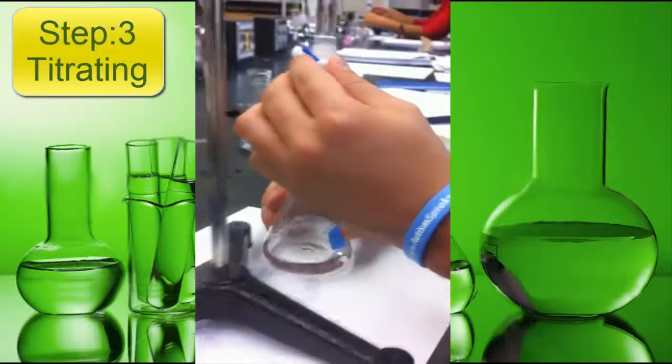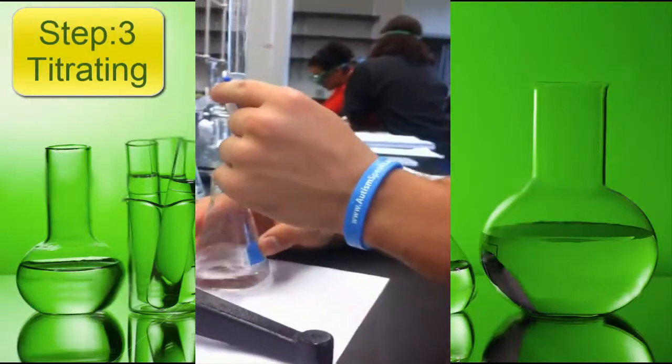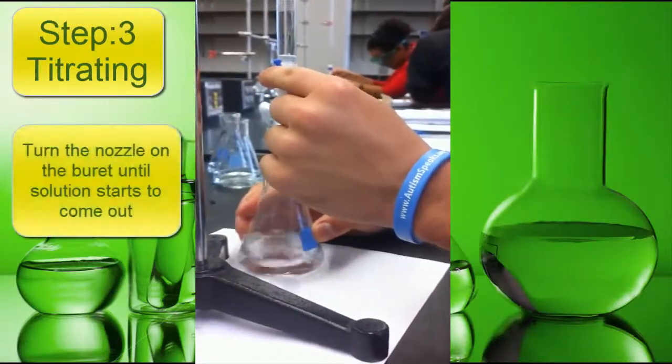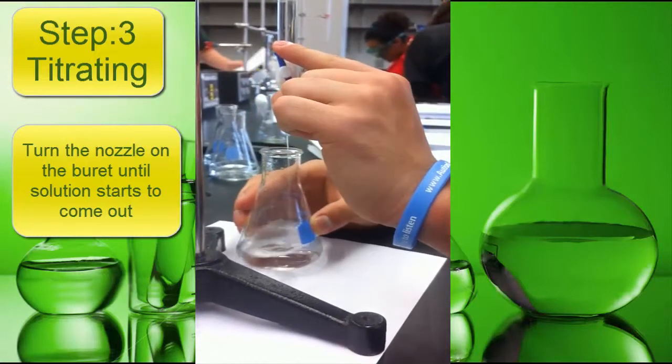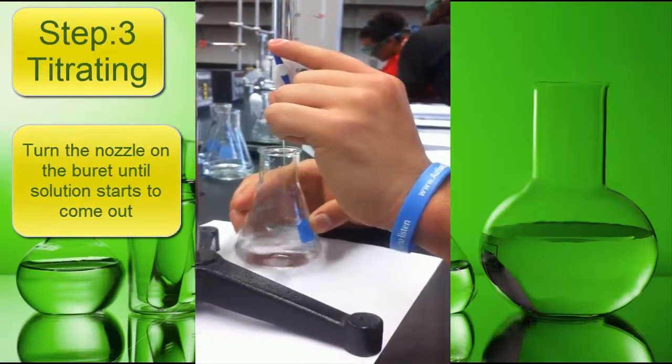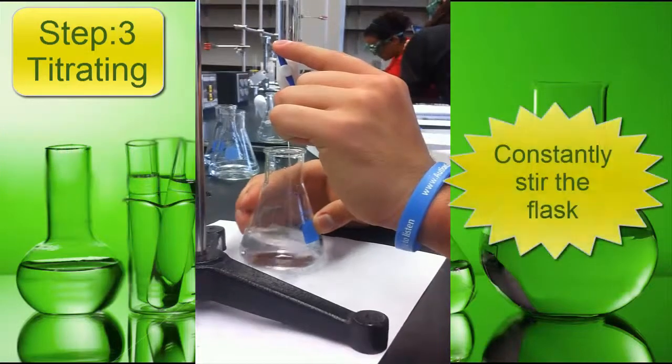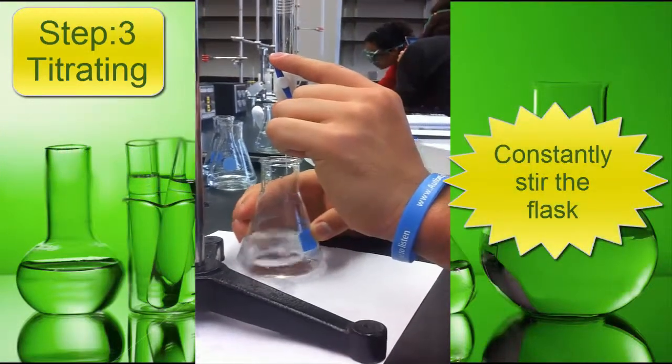Step 3: Titrating. Turn the nozzle on the burette until the solution starts to come out. Constantly stir or swirl the flask.